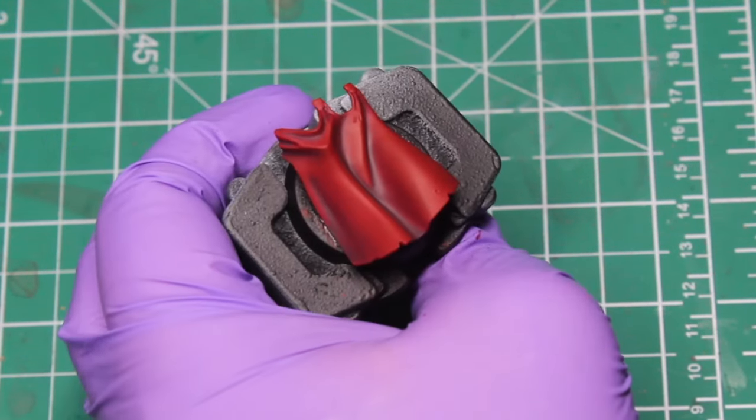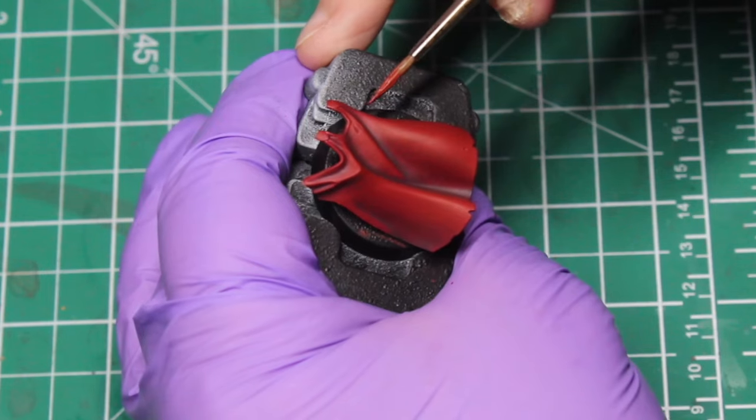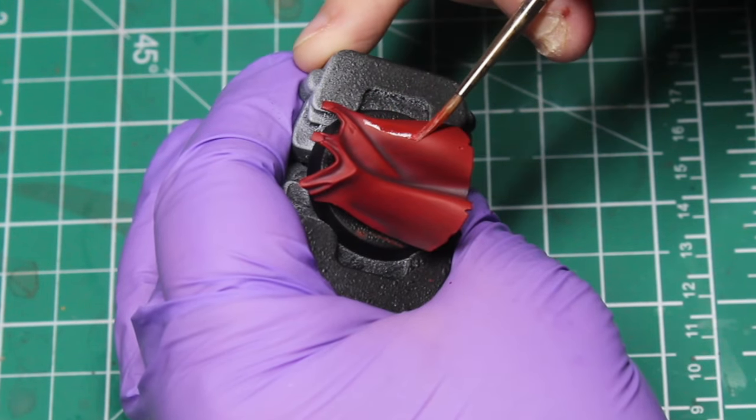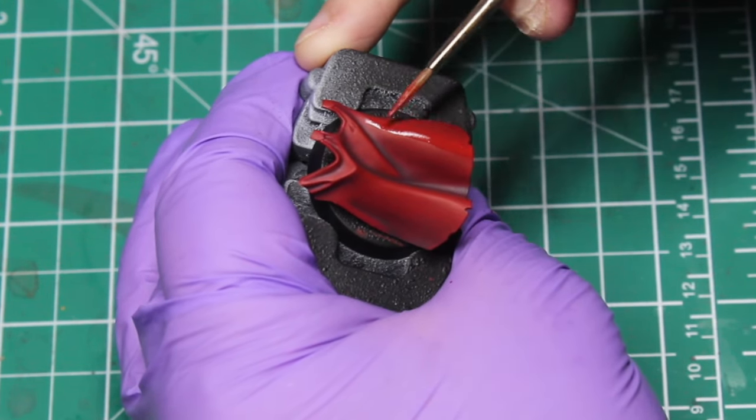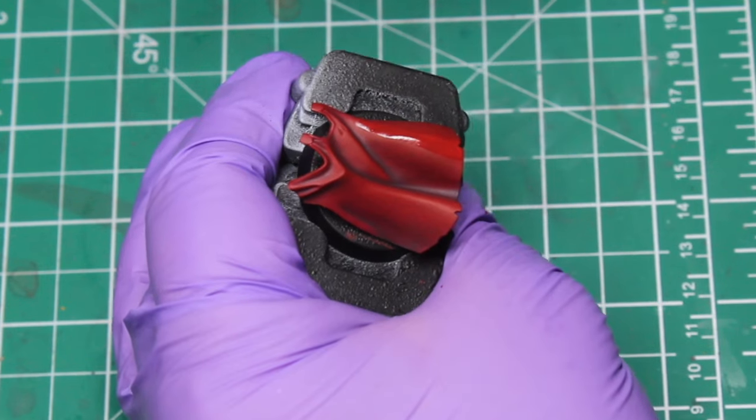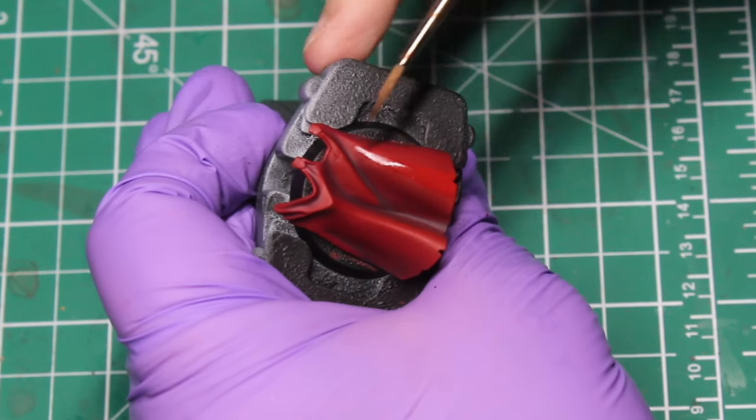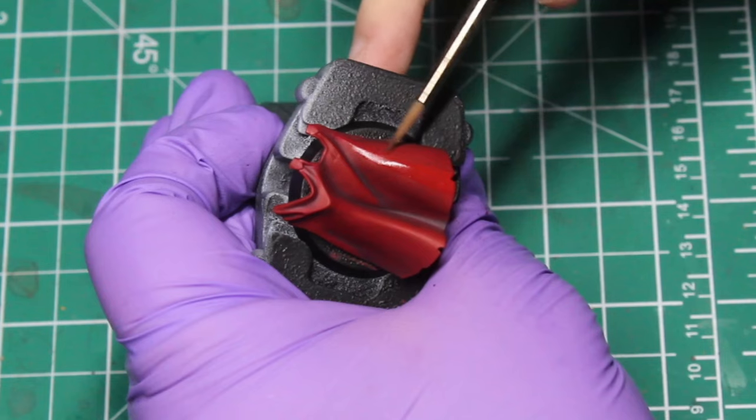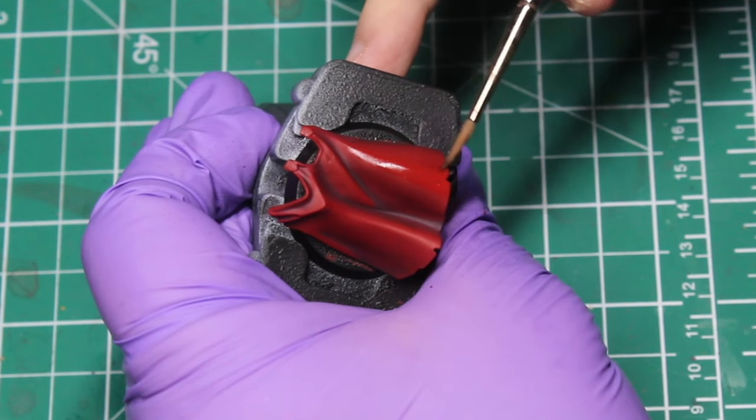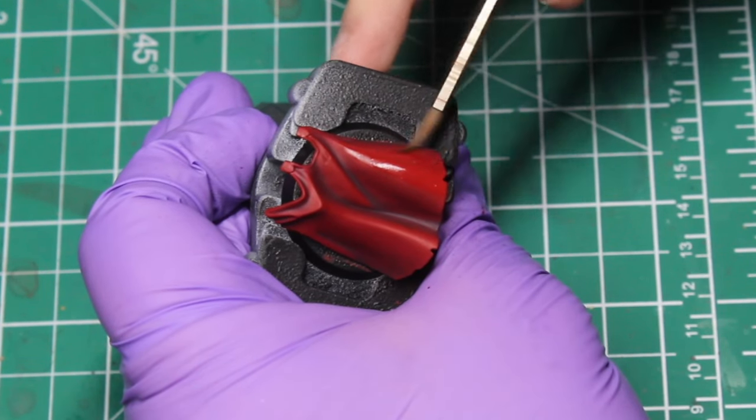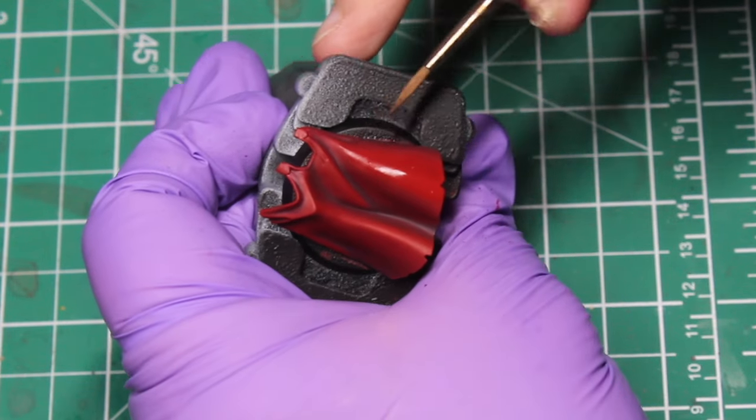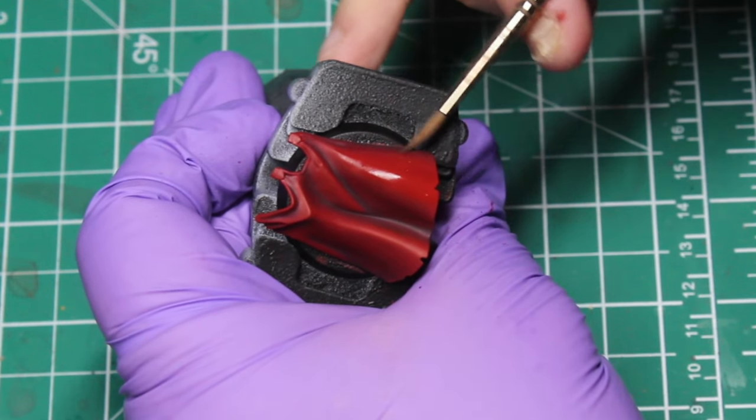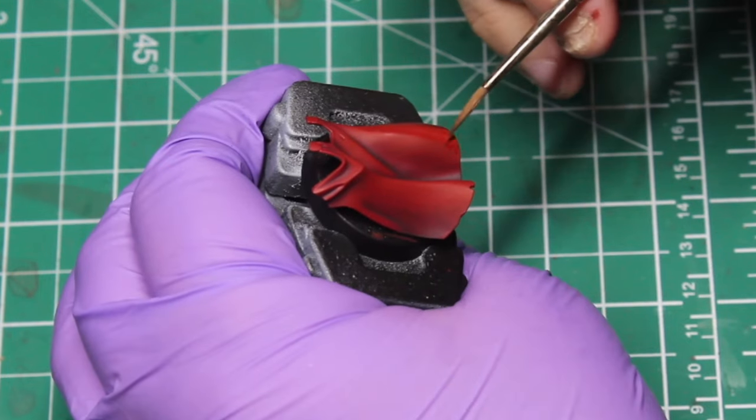What we're going to be doing now is we're going to push in the highlights with a 50/50 mix of Evil Sunz Scarlet and Mephiston Red. It's exactly what we just did before but we're just using a lighter color. So we put this color over the top and then again we rinse off our brush and then we pull this around.